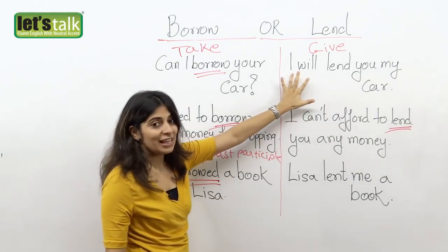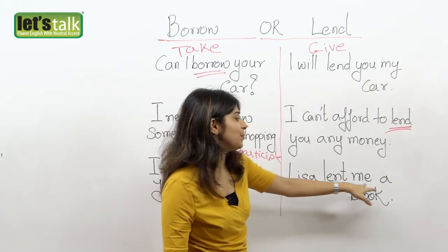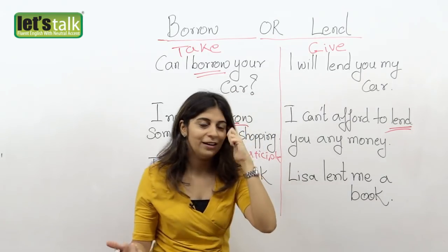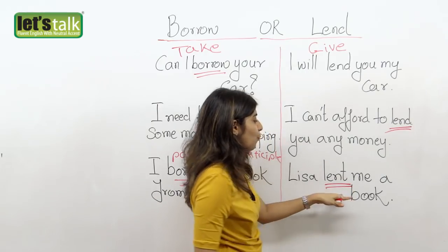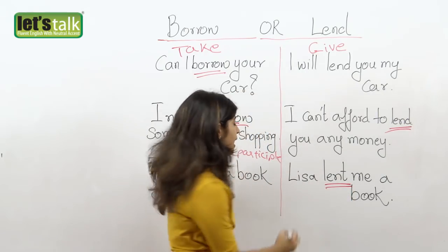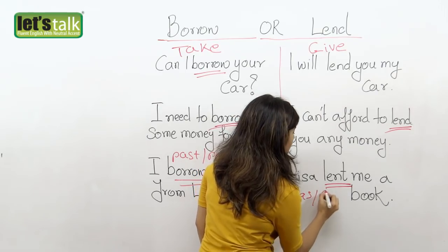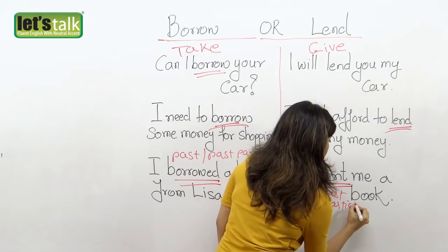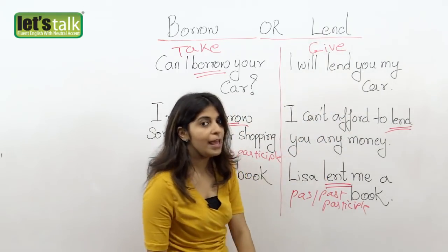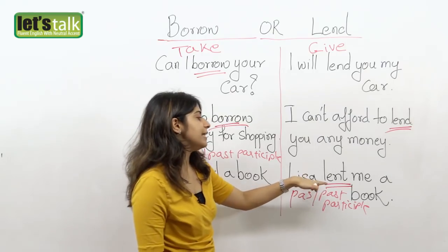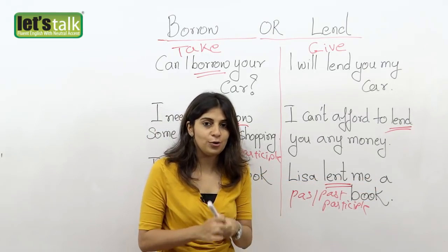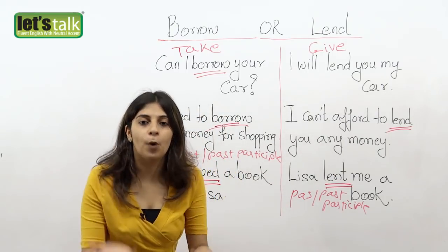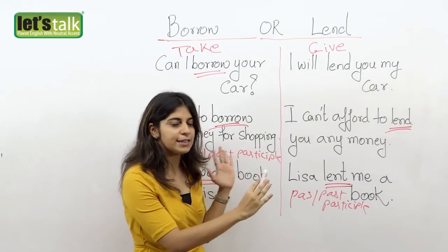So we would look at the word lend here: "Lisa lent me a book." Lisa has given the book to me, and that's why she used the word lend. Now lent is the past and past participle of the word lend, so here we use: "Lisa lent me a book." She knows with the expectation that I would return the book to her. So I hope you got this difference.